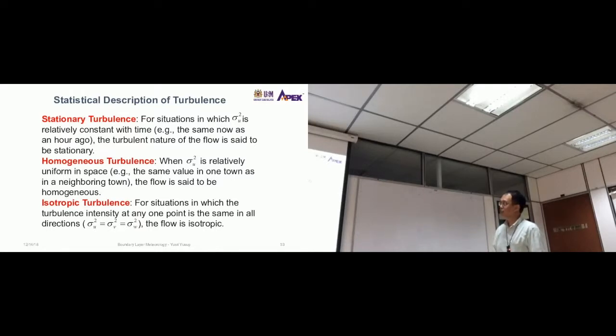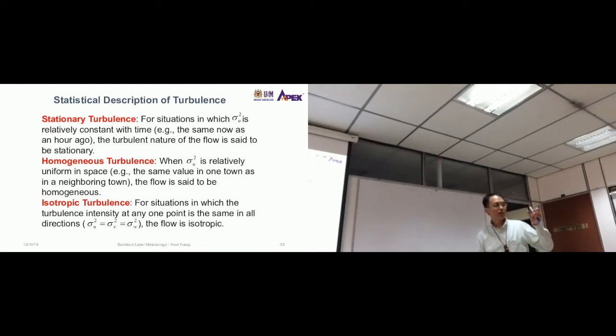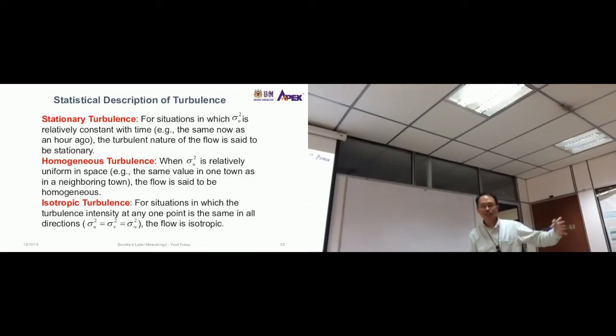For stationary turbulence, it's for situations in which sigma u-square or turbulence intensity that you just calculated is relatively constant with time. For example, the same now as an hour ago, that means the turbulence did not change. Not the actual value of wind, but the turbulence intensity does not change with time. When it doesn't change with time, it's called stationary turbulence.